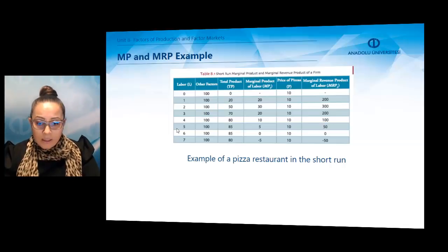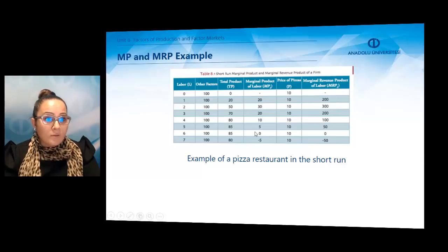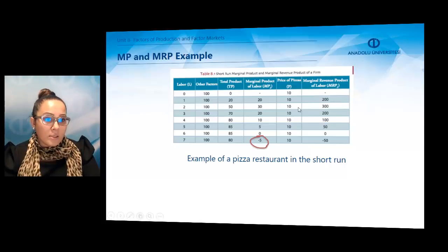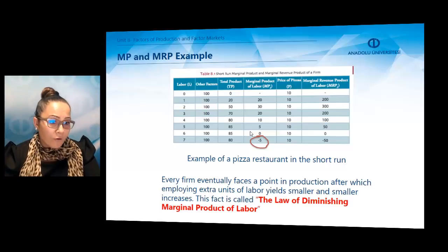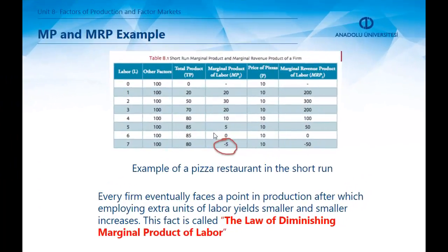As you can see in the chart, hiring from the sixth worker onward shows no positive effect on total product, and worker seven actually causes a decrease in production. Every firm eventually faces a point after which employing extra units of labour yields smaller and smaller increases. This fact is called the law of diminishing marginal product of labour.